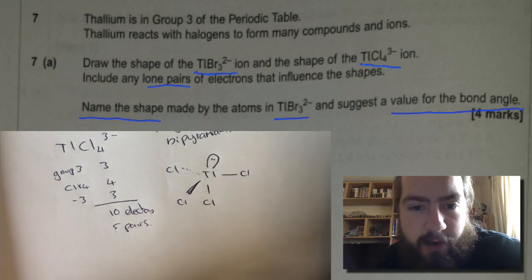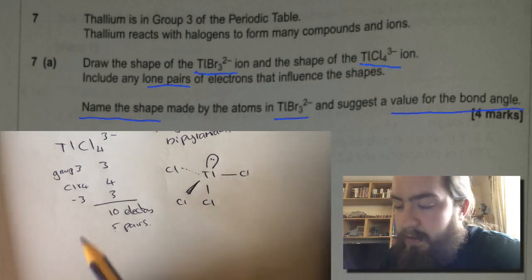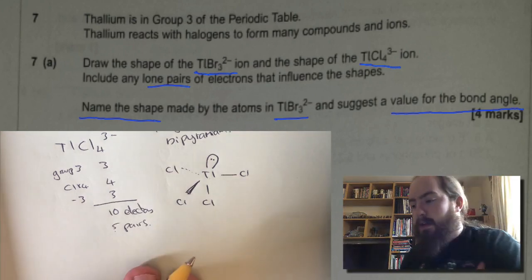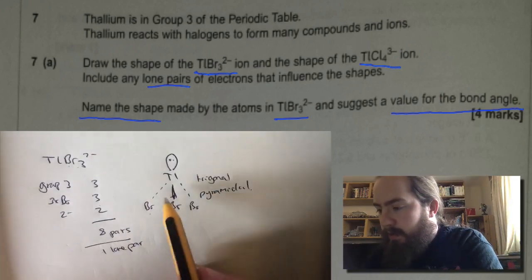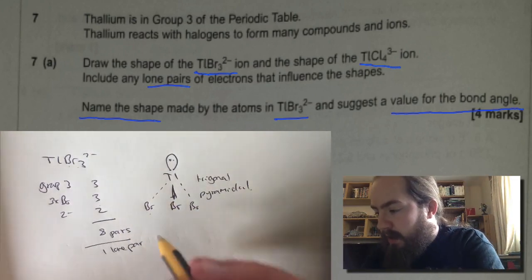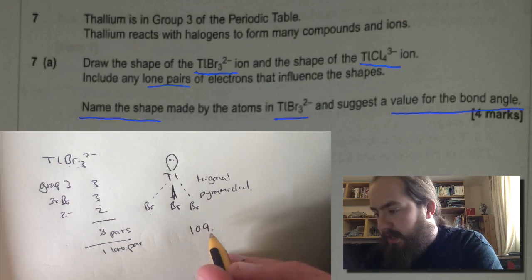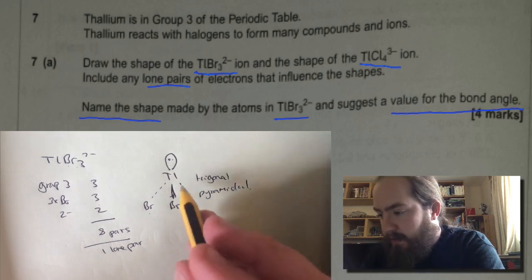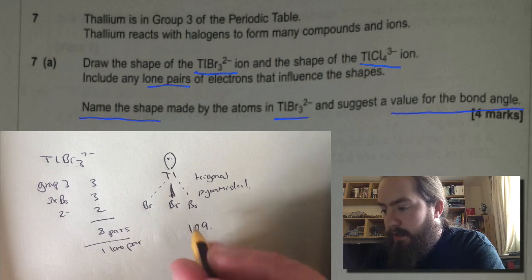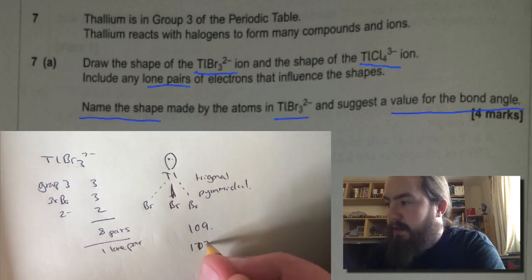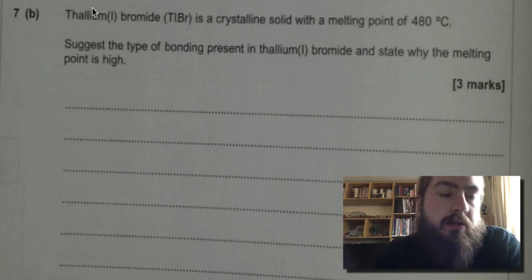Now the question asks us for the shape of the bromide ion and a value for the bond angle. So I'm just going to put that one back. Normally in trigonal pyramidal you'll have an angle of 109. We take off 2 degrees for each of the lone pairs. So we get 107 degrees. That's our answer.